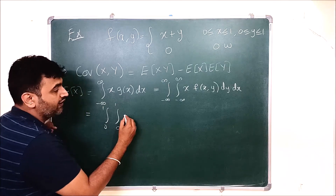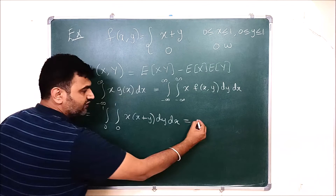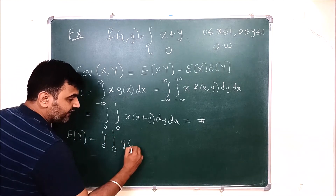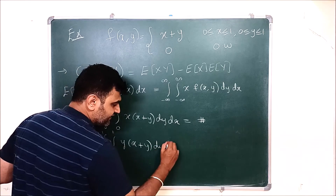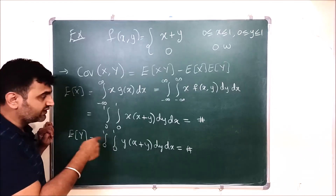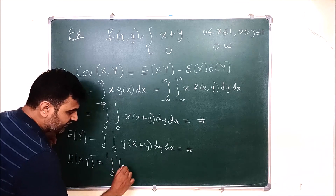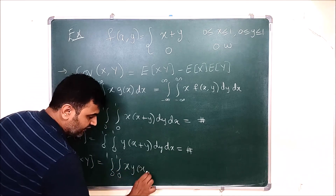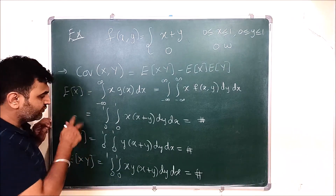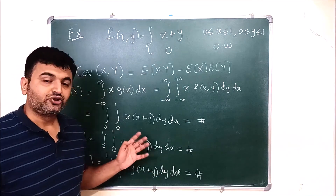So E[X] = ∫₀¹∫₀¹ x(x+y) dy dx, and E[Y] = ∫₀¹∫₀¹ y(x+y) dy dx. E[XY] = ∫₀¹∫₀¹ xy(x+y) dy dx. If you have forgotten how to do double integration, there is a link in the description on how to solve iterated integrals. Simplify each value, take the product, and compute Cov(X,Y) = E[XY] - E[X]·E[Y]. Pause the video and solve it — post your answer in the comment section.